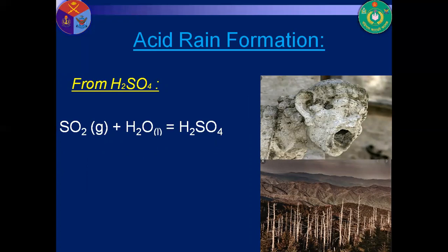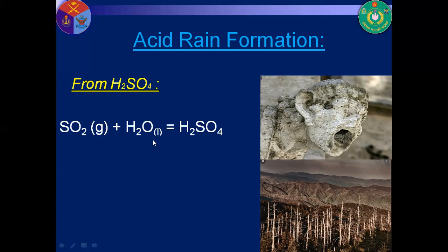Formation of sulfuric acid: sulfur dioxide reacts with water to form sulfuric acid. Finally, it forms sulfuric acid, which dissociates to form protons and makes the rain acidic.